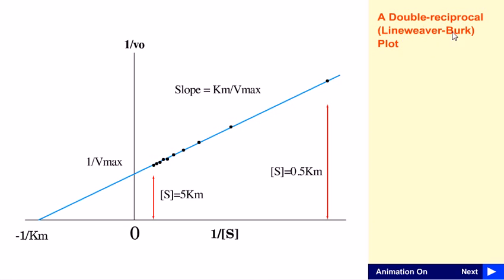This double reciprocal plot provides us a simple understanding about two different features. One is the Vmax, which is the maximum velocity for an enzymatic reaction. Another one is the Km value.